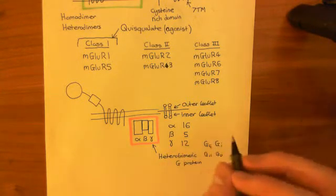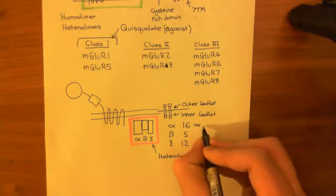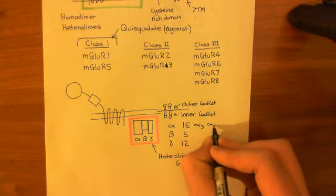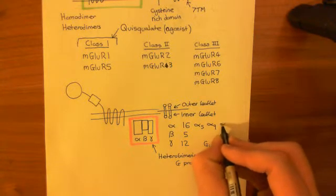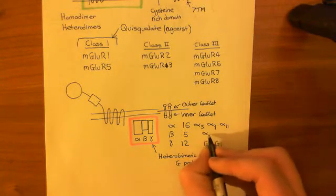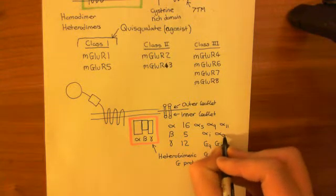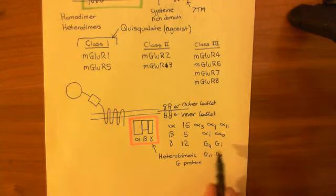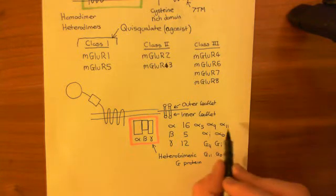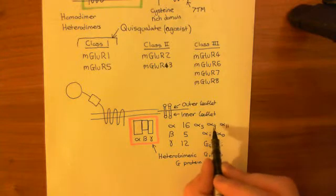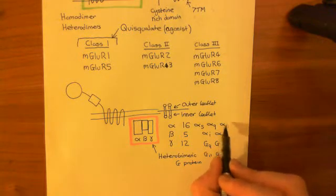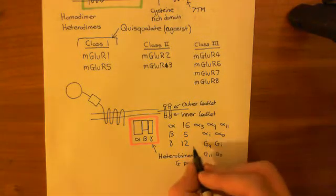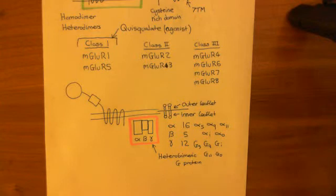There are 16 different types, of which some examples are: alpha S, alpha Q, alpha 11, alpha I, and alpha O. When people name their G proteins, they name it after the alpha subunit. So GQ is any G protein that has its alpha subunit as alpha Q. GI is one where the alpha subunit is alpha I, and so forth for G11, GO, and GS.